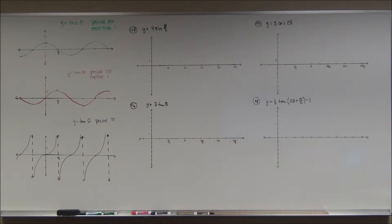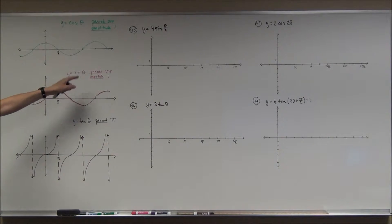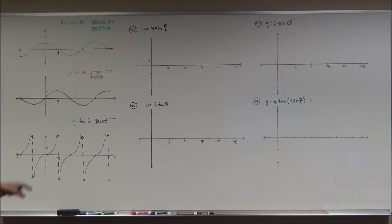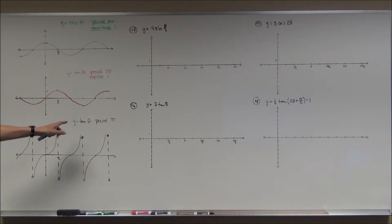We'll do a little review here on the graphs of trig functions. As you can see on the left, I have the three parent functions: cosine in green, sine in pink, and tangent in purple. Notice that the cosine and sine functions are very similar — they have that sinusoidal characteristic of the wave.